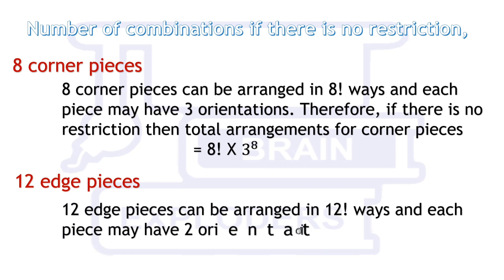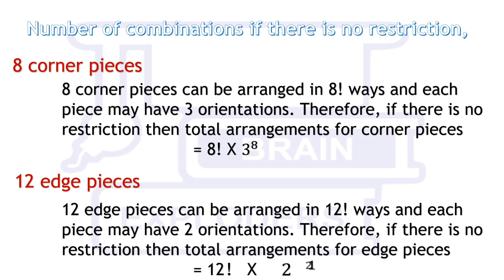Similarly, twelve edge pieces can be arranged in 12! ways and each piece may have two orientations. Therefore, if there is no restriction, then total number of arrangements for edge pieces is 12! × 2^12.